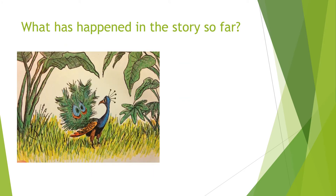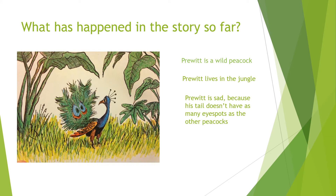What has happened in the story so far? Pruitt is a wild peacock. Pruitt lives in the jungle, and Pruitt is sad because his tail doesn't have as many eye spots as the other peacocks. Look at his tail — where it looks like two eyes. That's what's on peacocks' tails. That's why they call them eye spots — they look like a set of eyes.